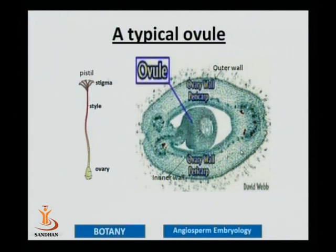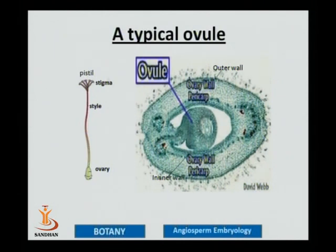Further germination will take place when pollen lands on the female reproductive structure. Before that, you should understand the female reproductive structure which is known as a gynoecium. A gynoecium is located centrally in the flower.